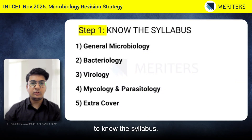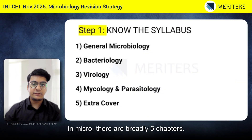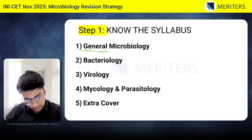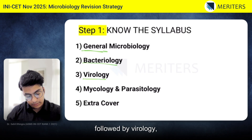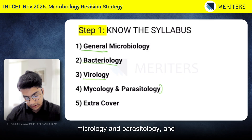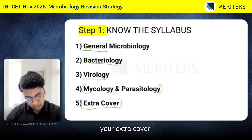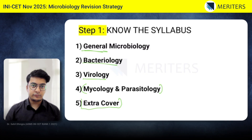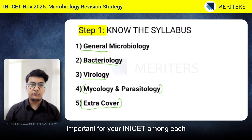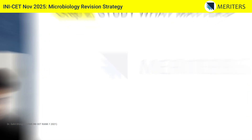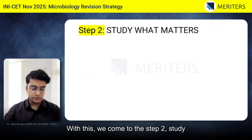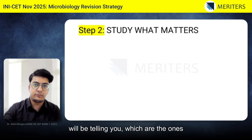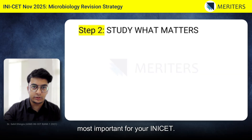First, know the syllabus. In micro, there are broadly five chapters: general microbiology, bacteriology, virology, mycology and parasitology, and your extra cover. In these five chapters, I will be telling you which topics are the most important for your INICET. With this, we come to step two — study what matters. You do not have to cover the entire syllabus, only the specific topics which are the most important for your INICET.